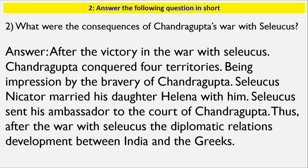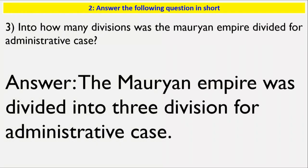Question: What were the consequences of Chandragupta's war with the Seleucus? After the victory in the war with Seleucus, Chandragupta conquered four territories. Being impressed by the bravery of Chandragupta, Seleucus Nicator married his daughter Helena with him. Seleucus also sent his ambassador to the court of Chandragupta. Thus, after the war with Seleucus, diplomatic relations developed between India and the Greeks.